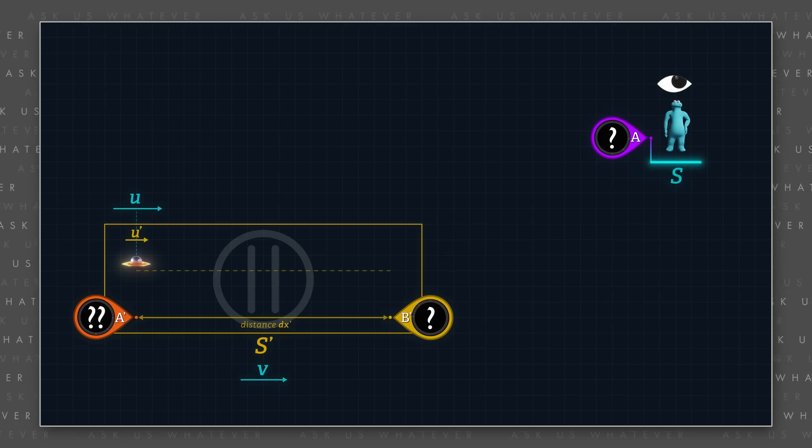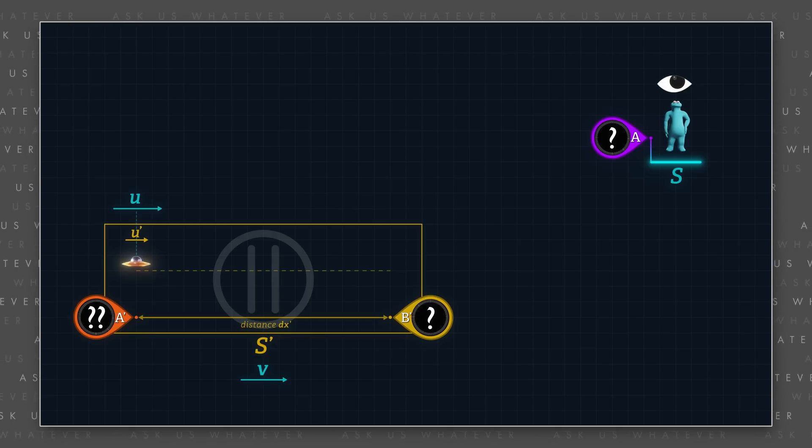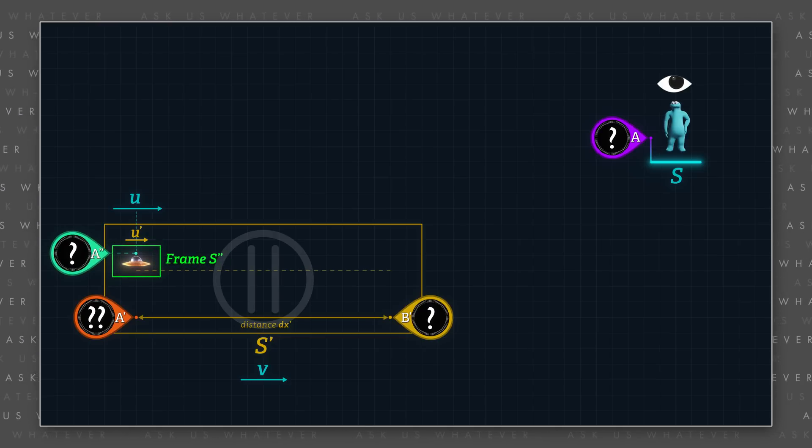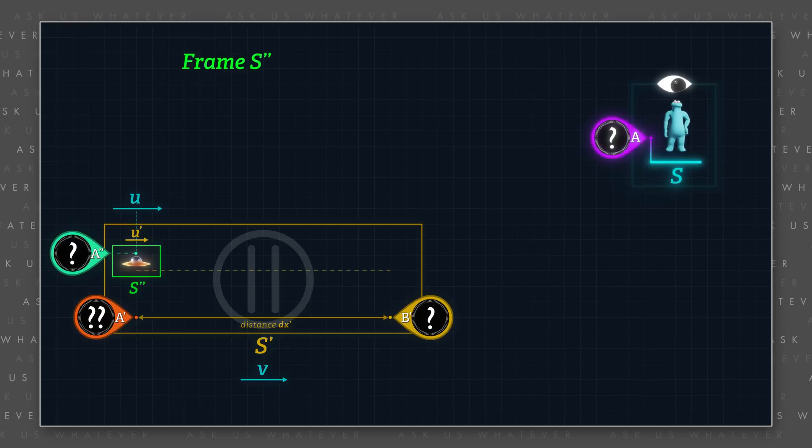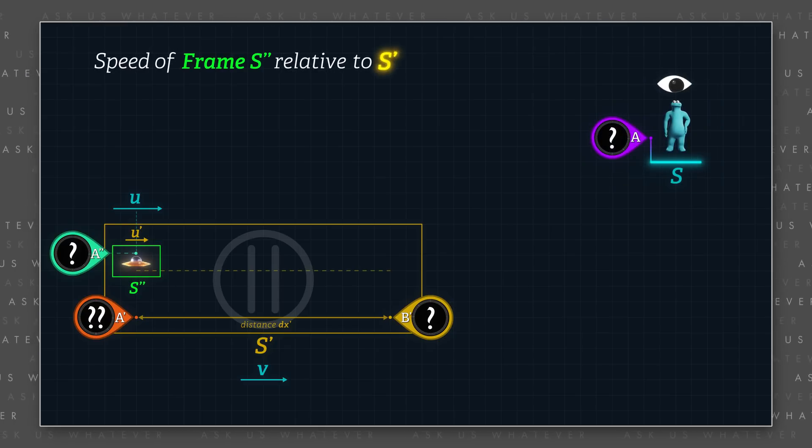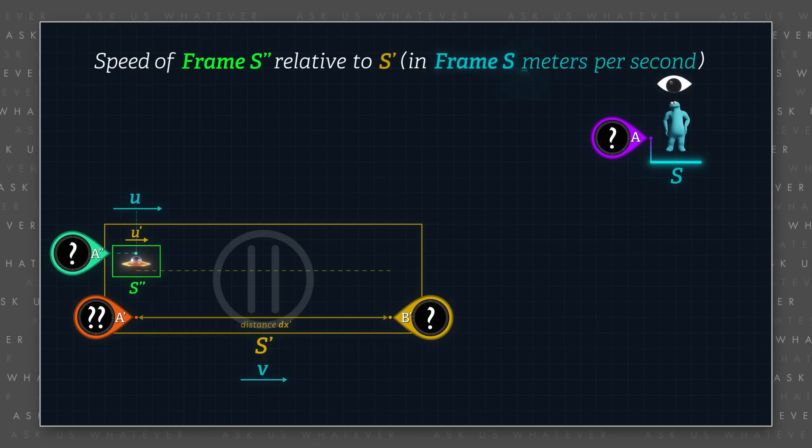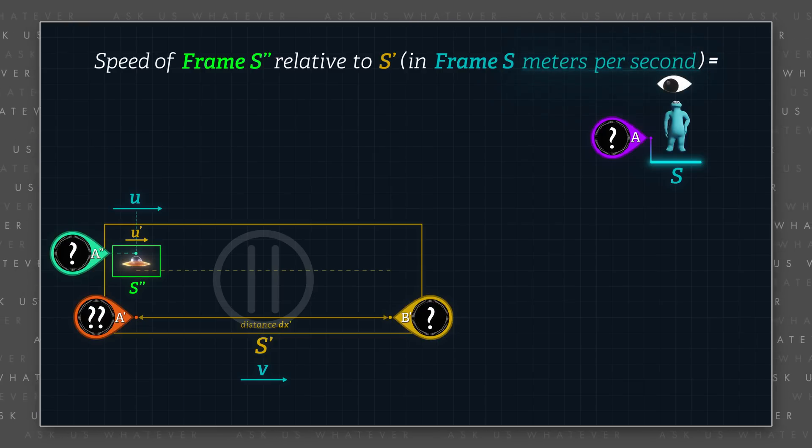There's another formula that will become handy when we begin to look at symmetries between multiple frames. Let's assume that a frame that we call frame s double prime, or some object within frame s prime, moves at speed u with respect to frame s. Then its speed relative to frame s prime, denominated in frame s meters per second, can be computed by simply subtracting v from u.